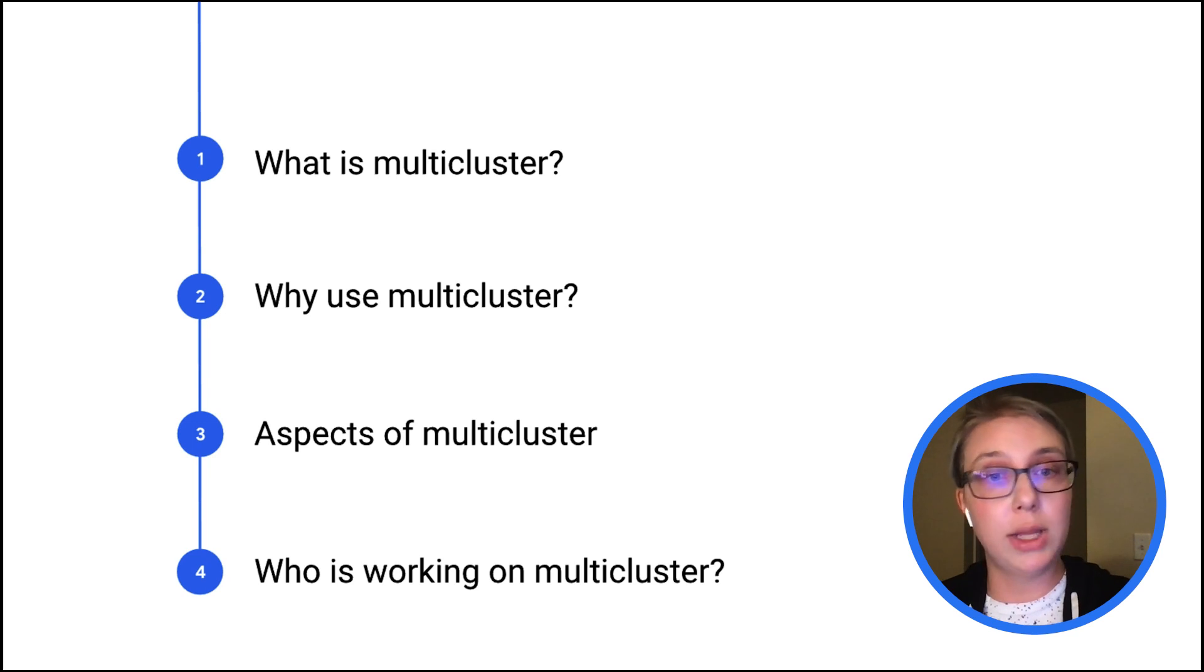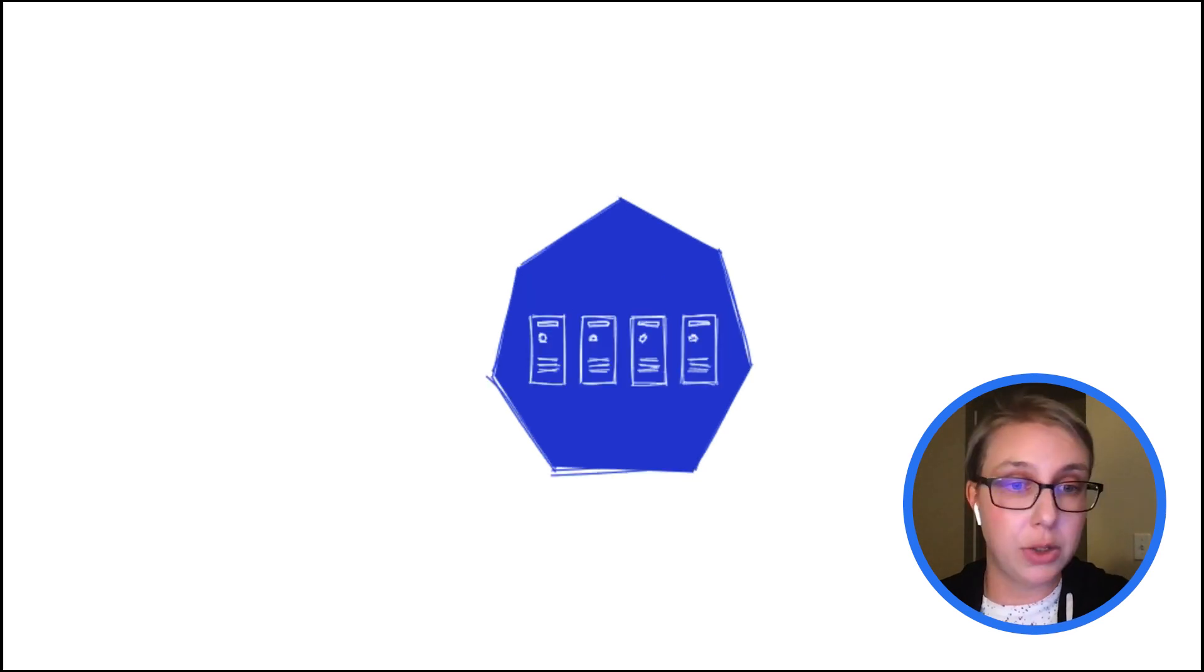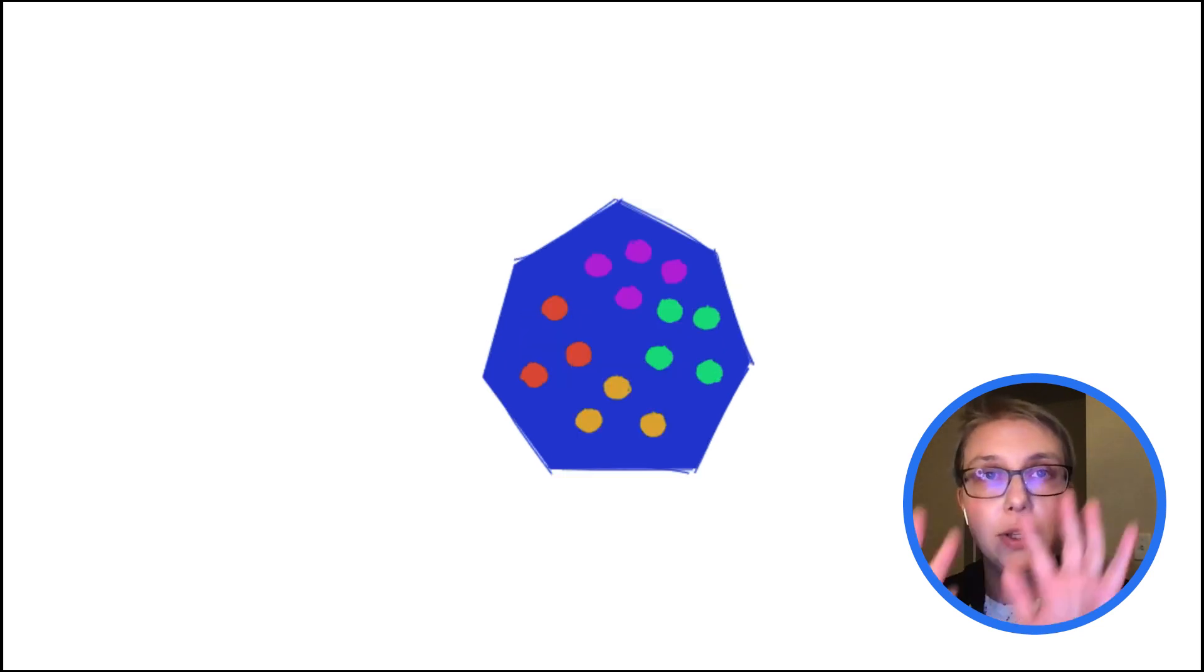So let's start with what is multi-cluster. Well, actually, let's start with one Kubernetes cluster. As you know, it can be composed of many nodes, all scheduling different workloads and network together. As an application developer, you don't need to know what node your workload is actually on. Kubernetes takes care of the scheduling and also the networking and possibly any persistent storage if you have stateful workloads. So it feels more like this, like they're all just working together out of the box.